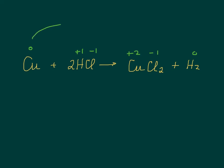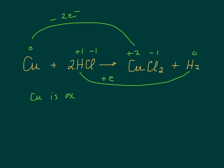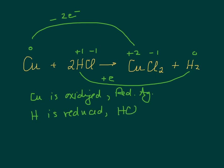You can see that copper is changing and that hydrogen is changing. The copper has lost two electrons and the hydrogen has gained an electron. So we say that copper is oxidized and it is the reducing agent. And we say that H is reduced, but HCl is the oxidizing agent. When you talk about what's being oxidized and reduced, you just give the element. But when you say what the agent is, you give the entire substance — so copper and HCl.